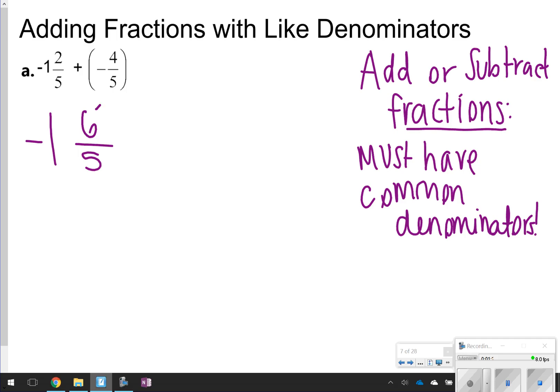We cannot keep this fraction like this, though, because this six-fifths is what's called an improper fraction. So we've got to change it to a mixed number first, which is going to be one and one-fifth, because five can go into six once with one left over, and then just add it back to this one. So that's going to give us negative two and one-fifth is our answer for this one.